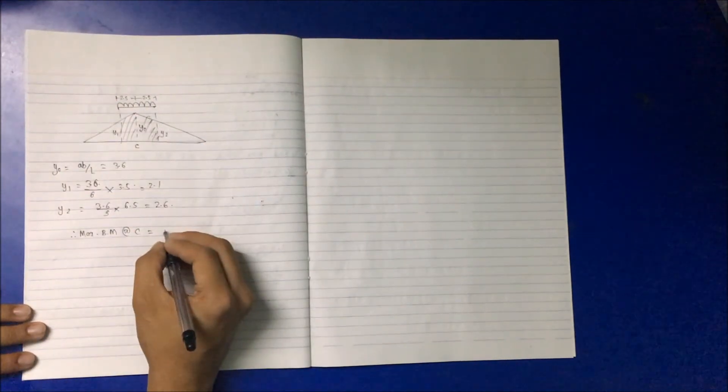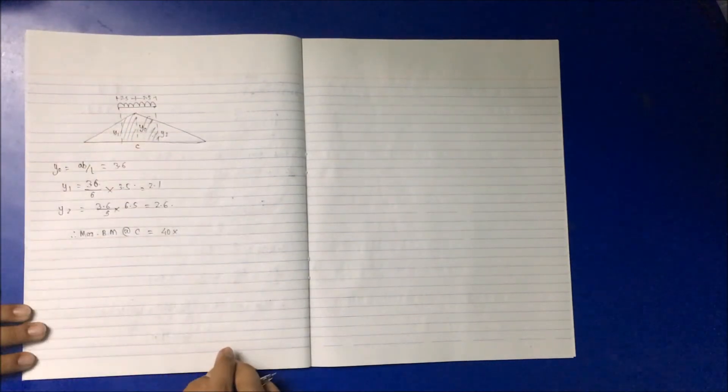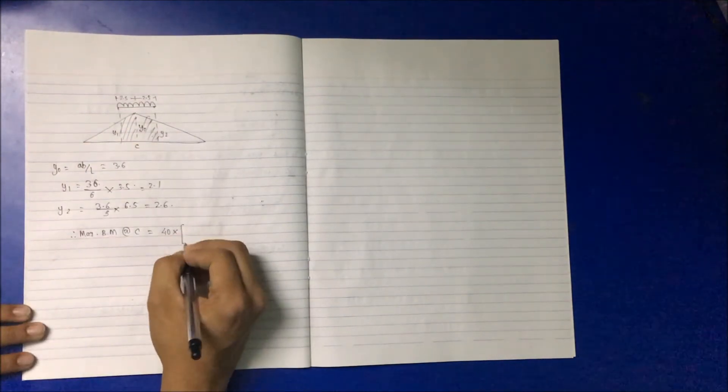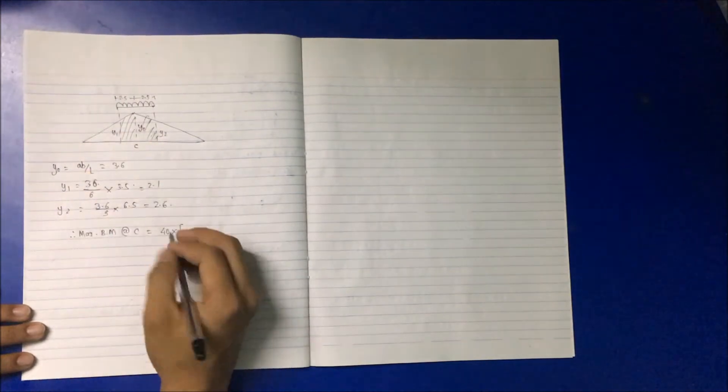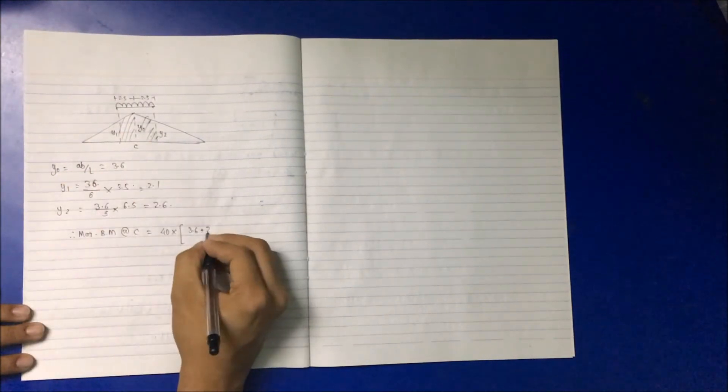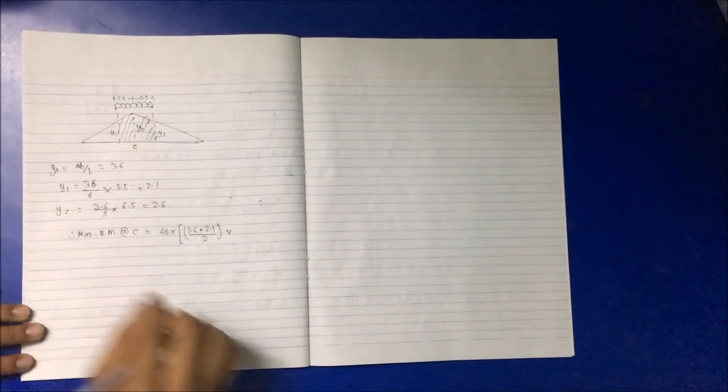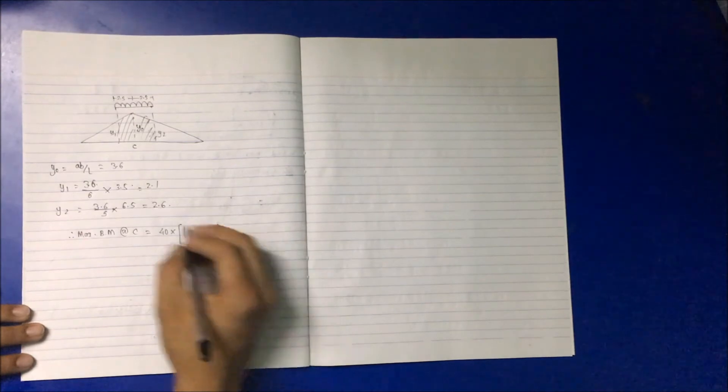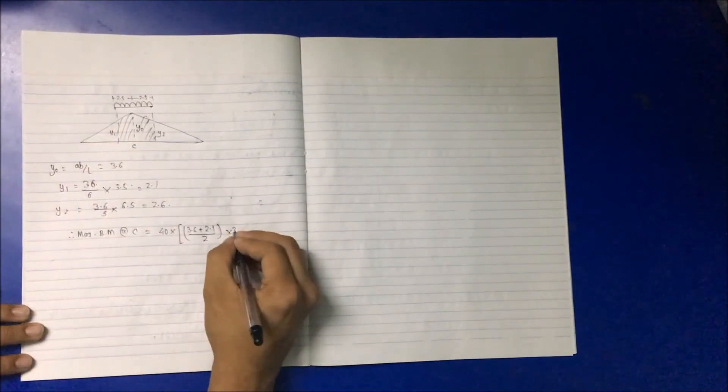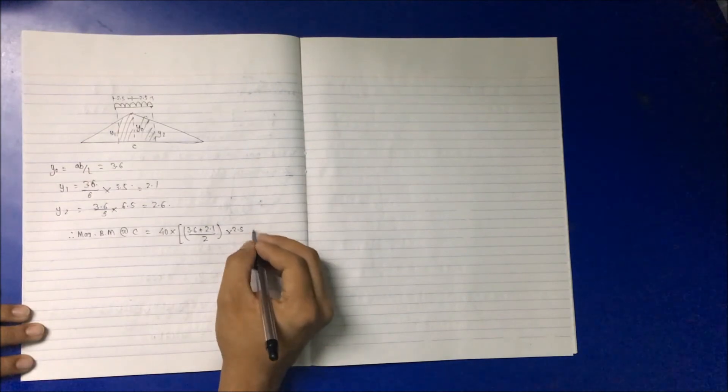The loading intensity is the same, that is 40, multiply by this area. So y_naught plus y1, that is y_naught equals 3.6 plus y1, 2.1, divided by 2, multiply by this distance which is 2.5.